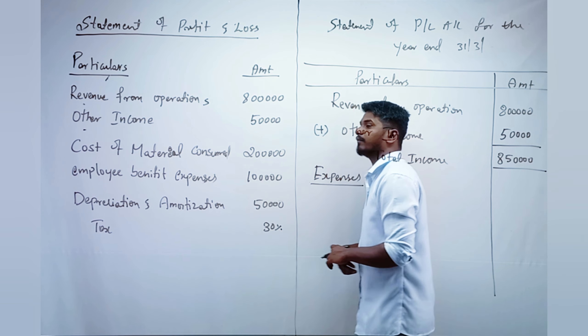The first item is Revenue from Operations, given as 5 lakh rupees. Next is Other Income — we don't have any, so put a dash. Total Income is therefore 5 lakh rupees.